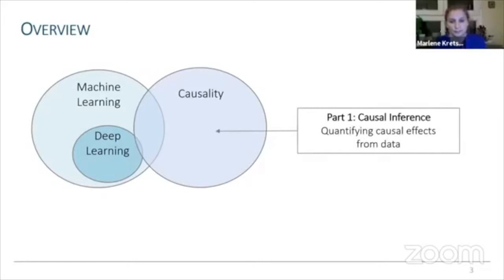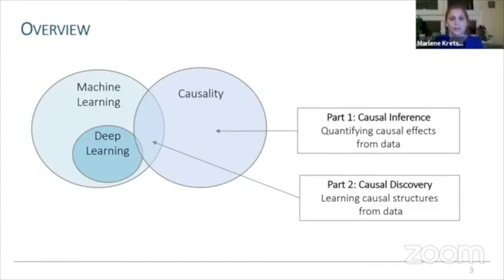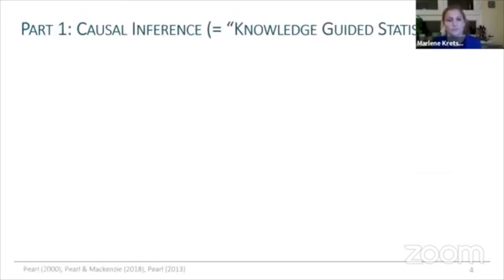In the first part of my talk, I will discuss causal inference and how we can use it to quantify causal effects from data. In the second part, I will talk about causal discovery, which is more at the intersection with machine learning, and briefly discuss how this can be used to learn causal structures from data.